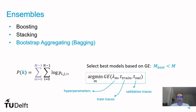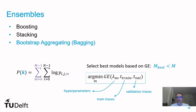What we use here is bootstrap aggregating — the bagging method — which combines the predictions of multiple neural networks into one. In the key rank summation for every key candidate, we add an outer summation over all models. We don't need to sum all trained models, but if we can define a group of good models by minimizing guessing entropy as the selection metric, we choose that group and perform the summation. This is a function of different hyperparameters, the training traces, and the validation traces.